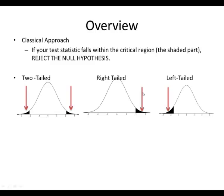For a right-tailed test, if your test statistic falls on the right-hand side in the shaded area, then you would reject. For a left-tailed test, if your test statistic falls on the left, that's when you reject.